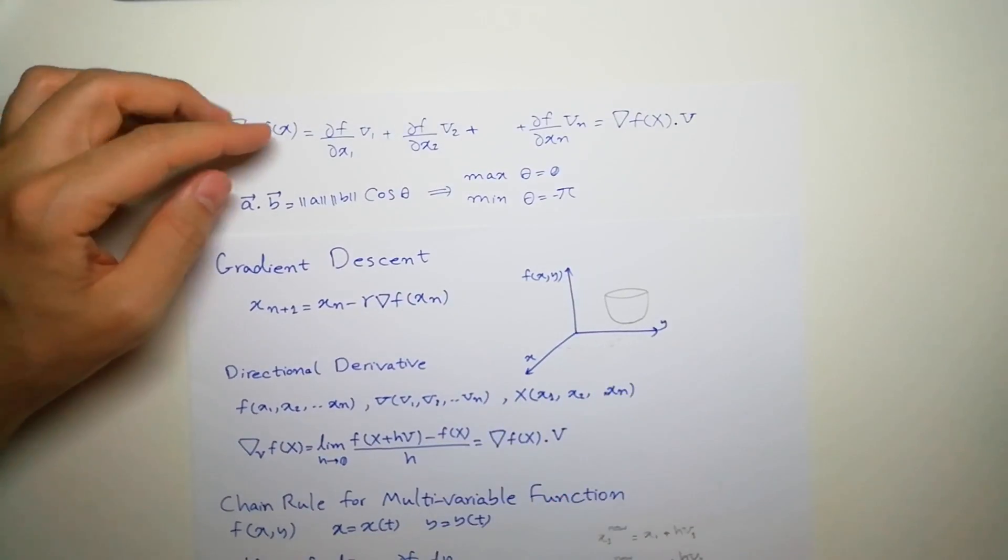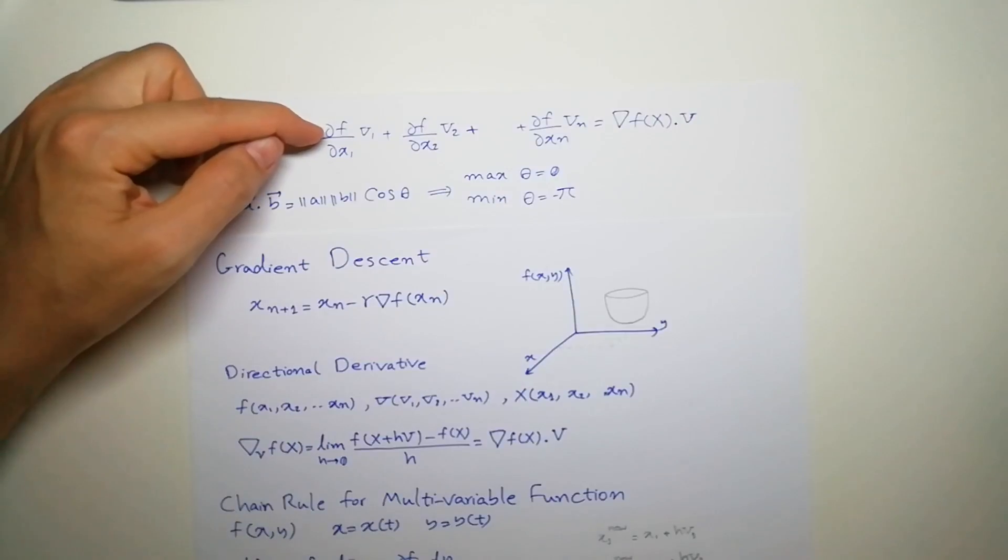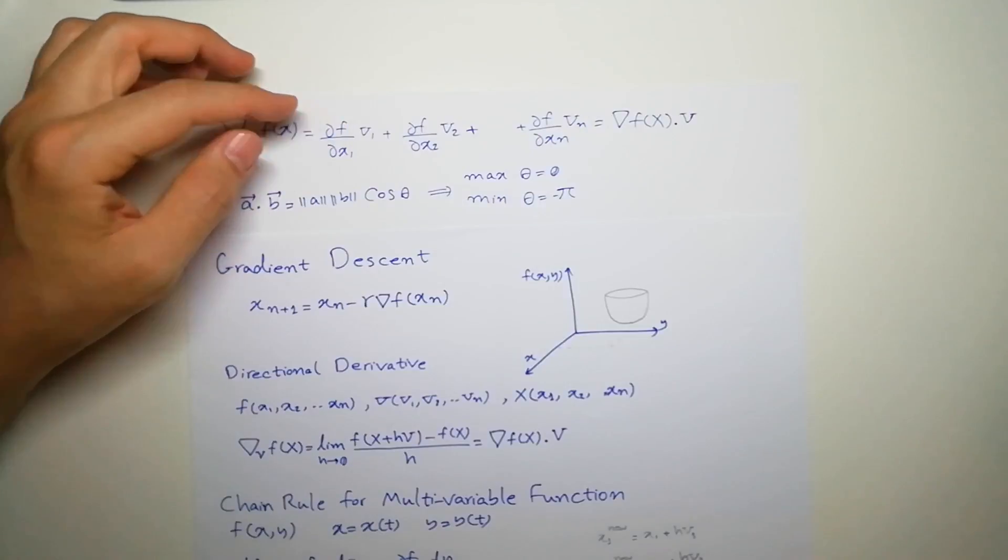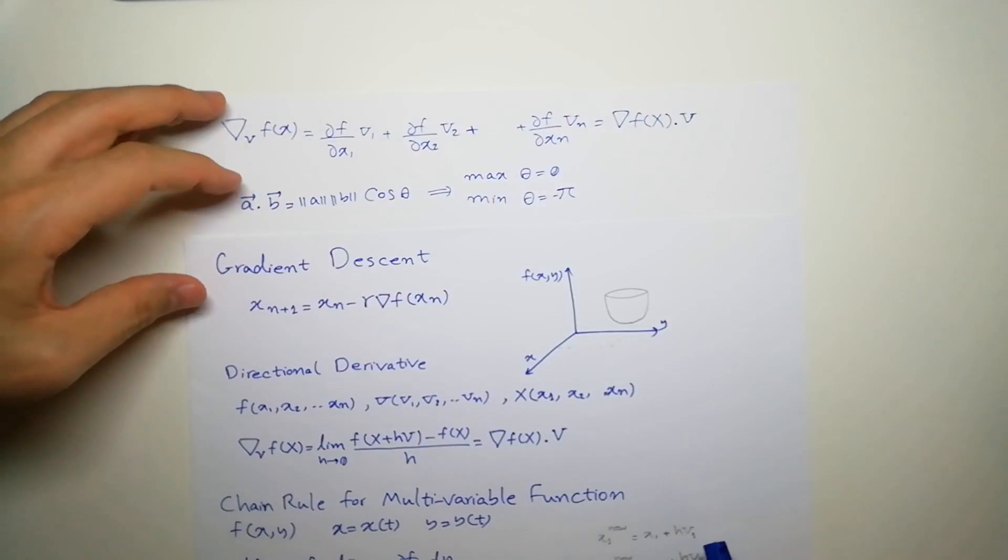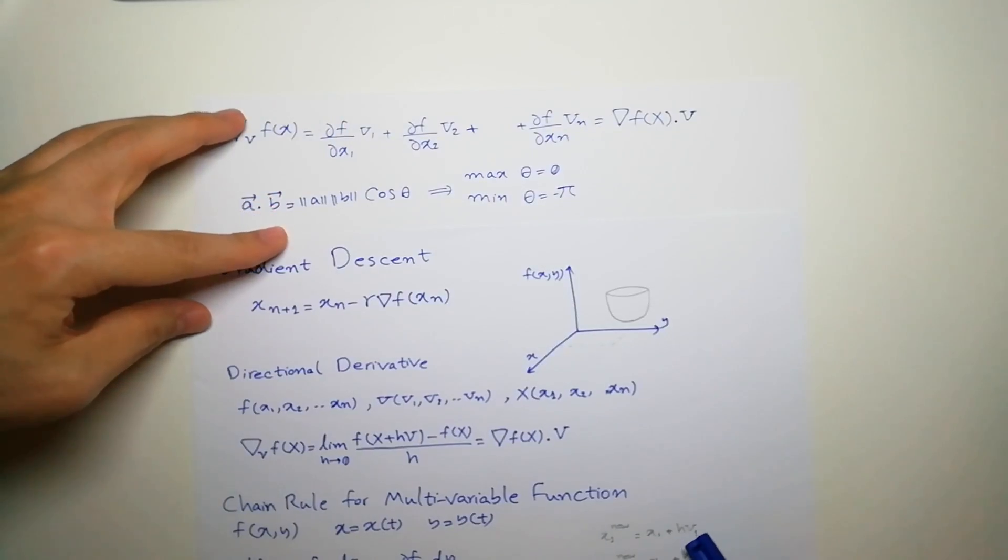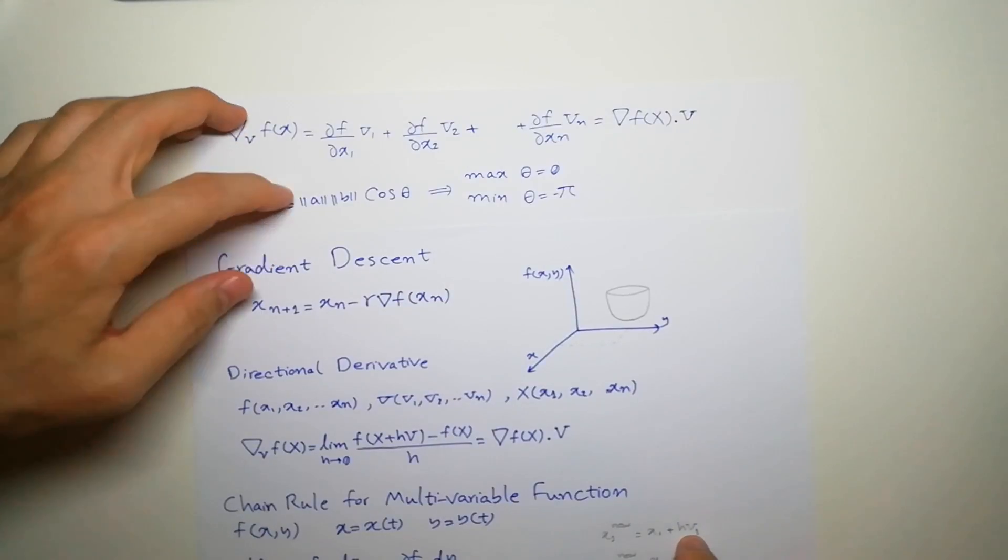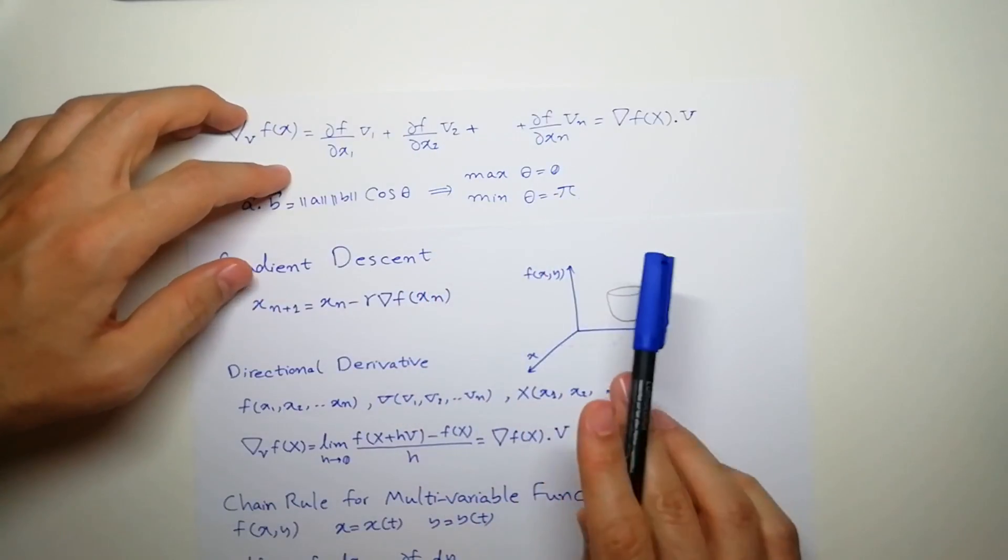So if you use the chain rule, you can see the derivative of f relative to x1, and x1 relative to h, which gives us v1, and so on for v2, v3 until vn.